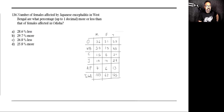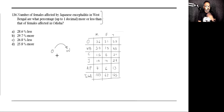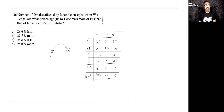Let's look at question 136. We have to be very careful when you read this — there's no need to hurry. You have got enough time, 5 minutes for a set is a lot. The question asks: number of females affected by Japanese encephalitis in West Bengal are what percentage more or less than females affected in Odisha? So Odisha is the base. Female in Odisha is 21. West Bengal is 15. Obviously it's going to be less.